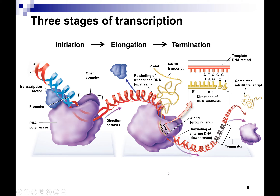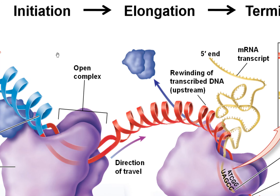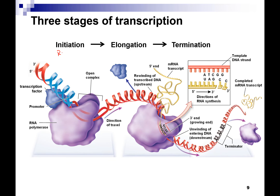There are three stages of transcription: initiation, elongation, and termination. Initiation means RNA polymerase binds the promoter — that's where it initiates. Elongation is the act of copying. And termination is the end.